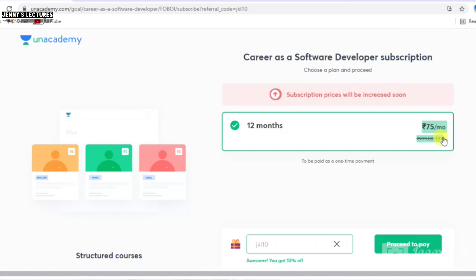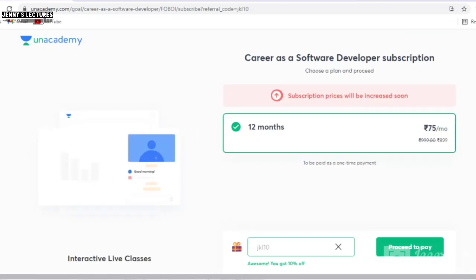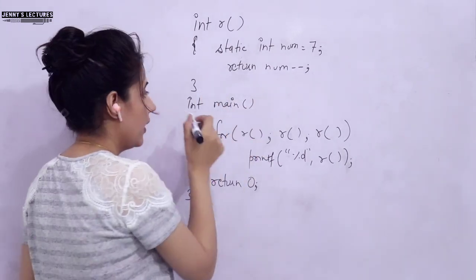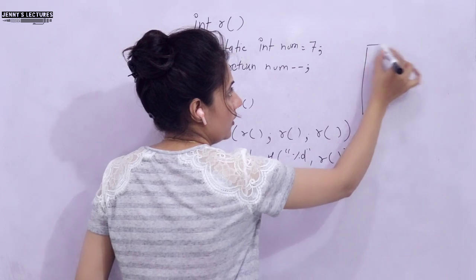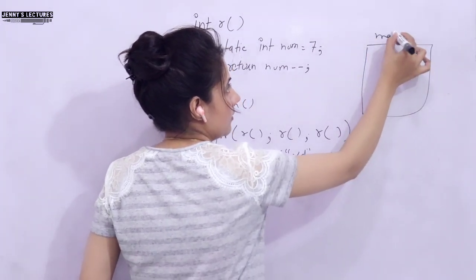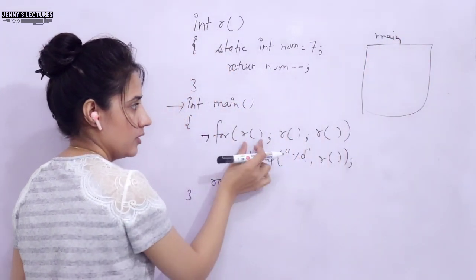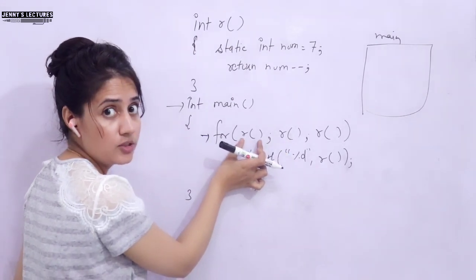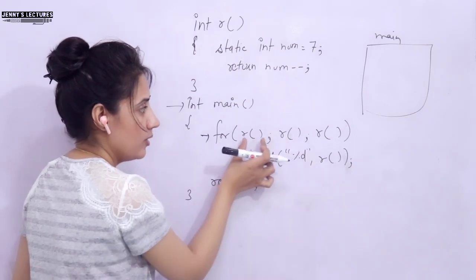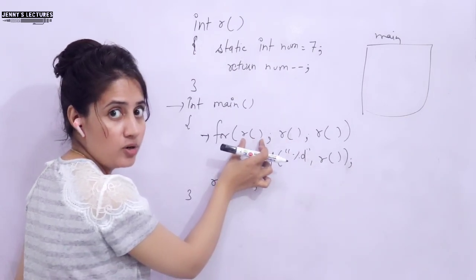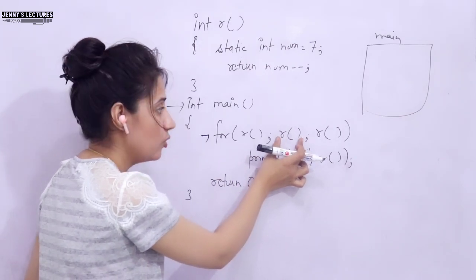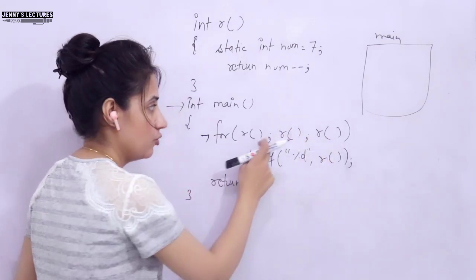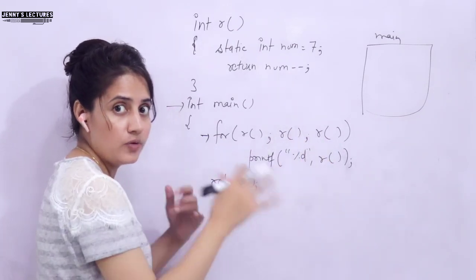Use my code JKL10 to get 10% extra discount on your subscription. Now back to the topic: when you run this program, control first goes to the main function where memory is allocated. In main, we have a for loop, and here we are calling function r — at the initialization, at the condition, and at the increment/decrement part — so three times we are calling this function.